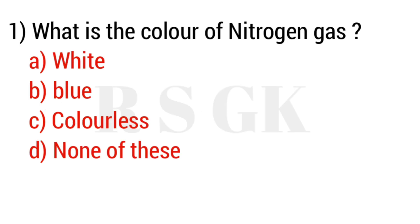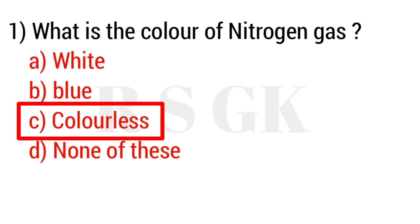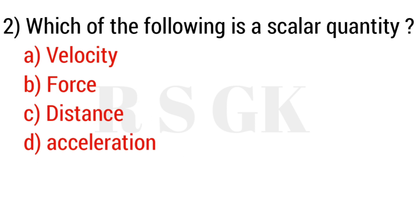Question number one: What is the color of nitrogen gas? Option A: white, Option B: blue, Option C: colorless, Option D: none of these. The answer is Option C: colorless. Question number two: Which of the following is a scalar quantity?